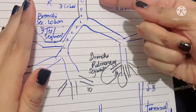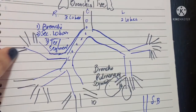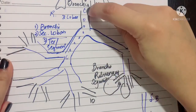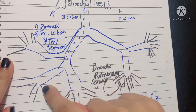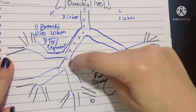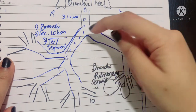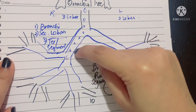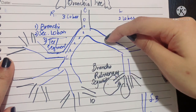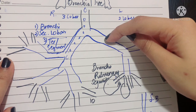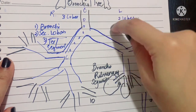Another important clinical is the foreign body. A foreign body is most likely to lodge in the right lung because it is wider and more in line with the trachea — at an angle of approximately 25 degrees — whereas the left bronchus is at an angle of 45 degrees in relation to the trachea.